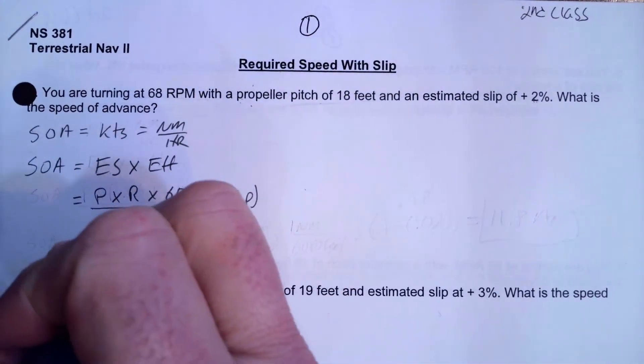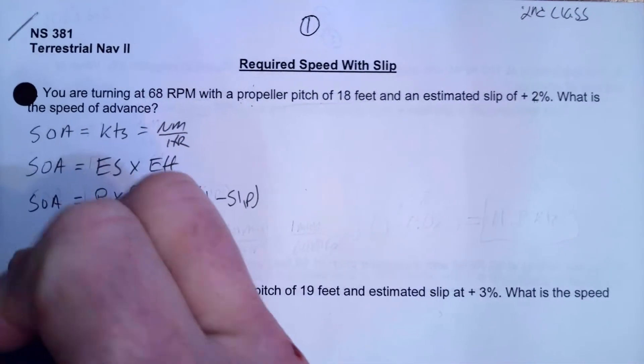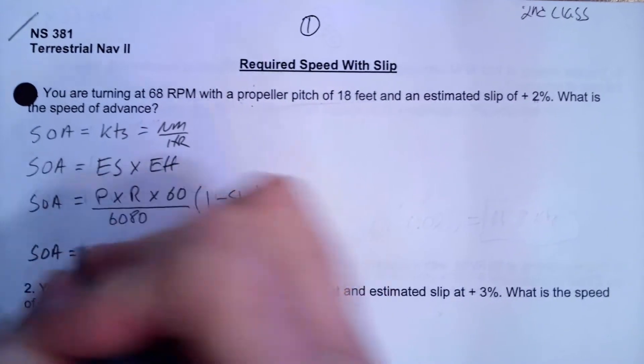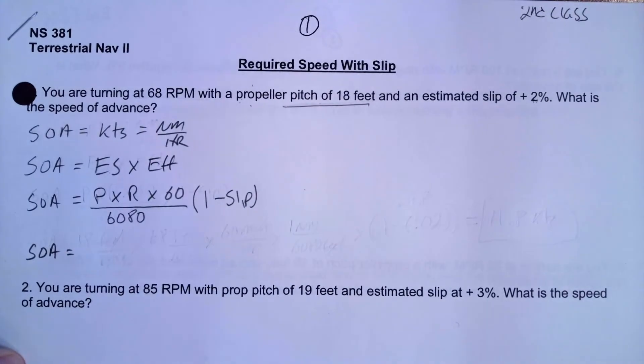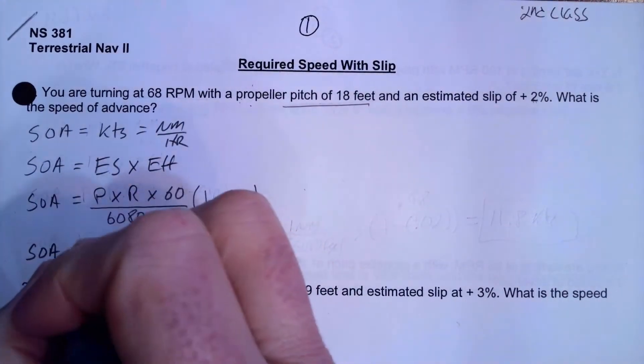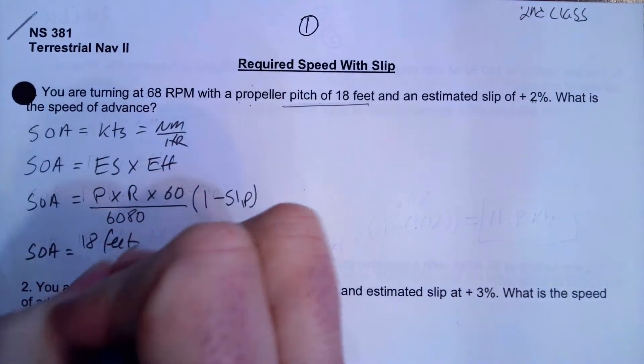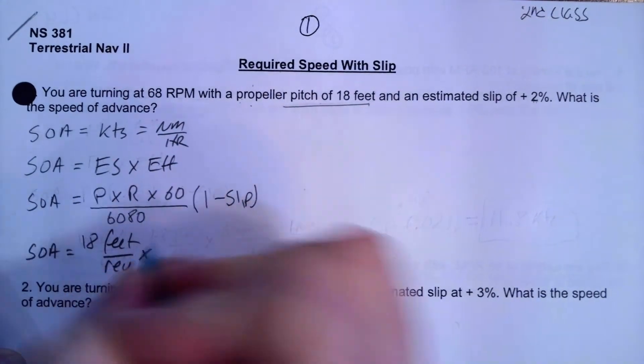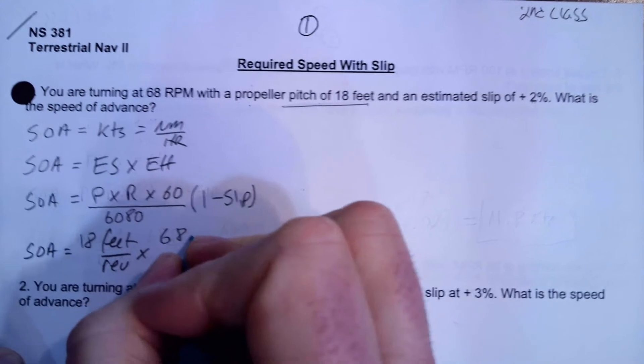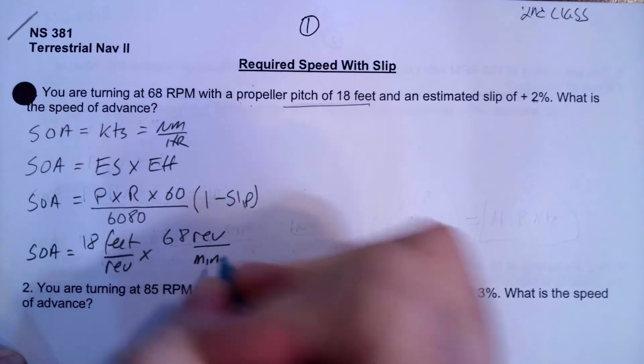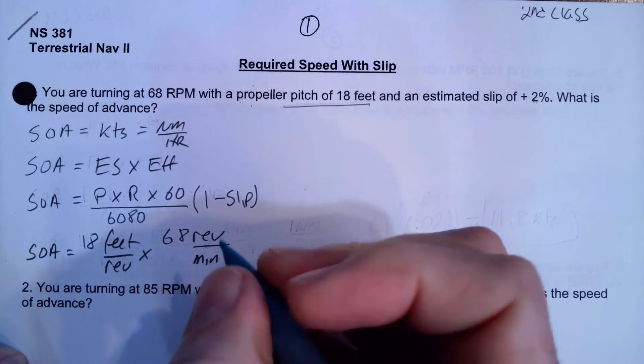So let's go ahead and do this. Our speed of advance is going to equal our pitch. So let's start with that. The pitch is 18 feet, but it's not 18 feet, it's 18 feet per revolution. So that's 18 feet per revolution, great, times our RPM. Our RPM was 68 revolutions per minute. Alright, so our revolutions cancel out.